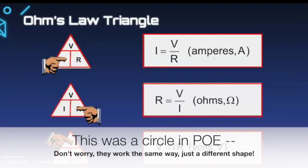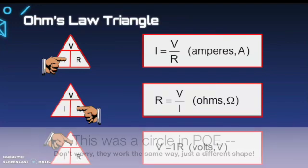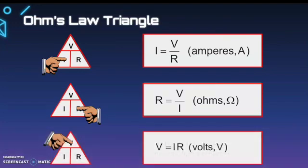We can set this up in Ohm's law triangle, which makes it easy to calculate any one of these values. To calculate current, cover the I with your finger and it indicates V over R, measured in amperes. To calculate resistance, cover the R and you have V over I, measured in ohms. And if you want to calculate voltage, it would be I times R, measured in volts.